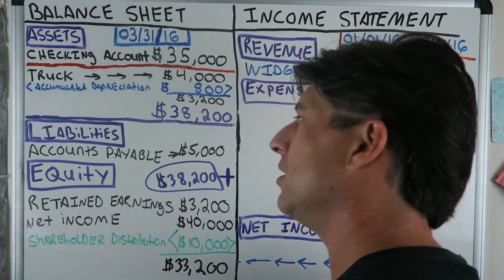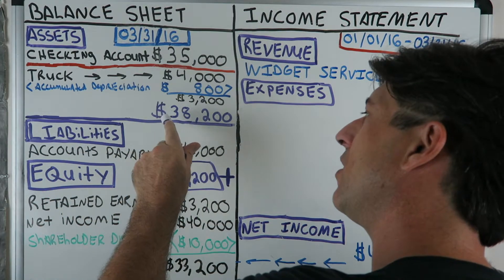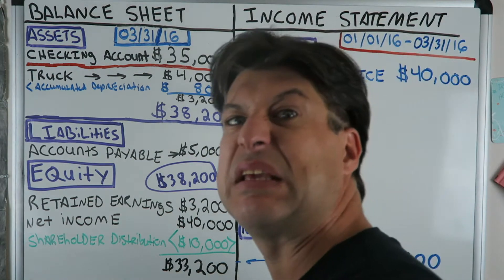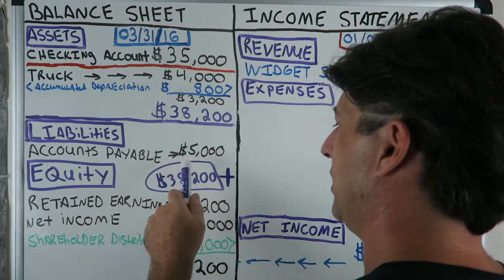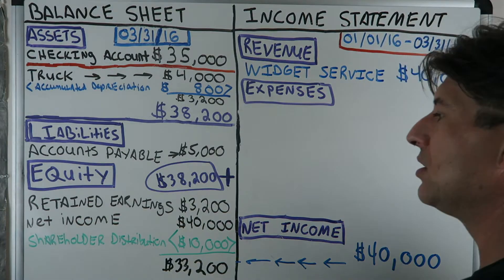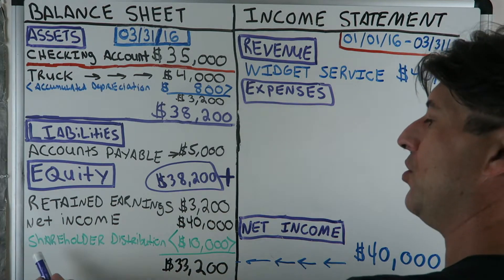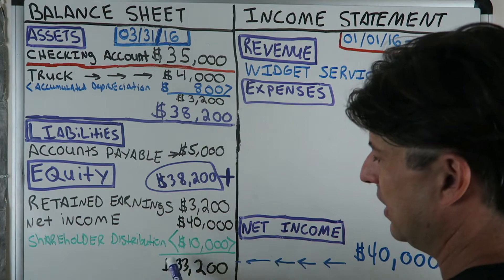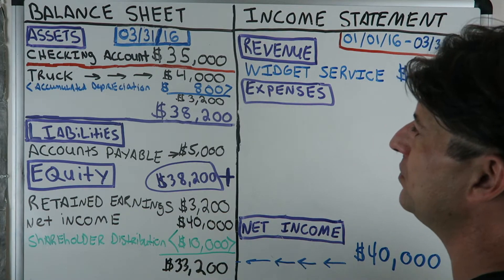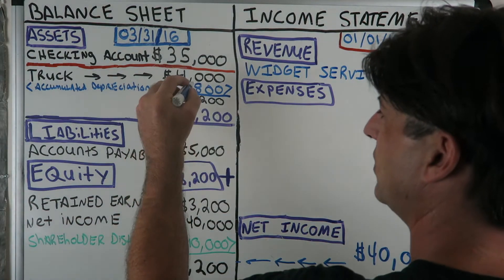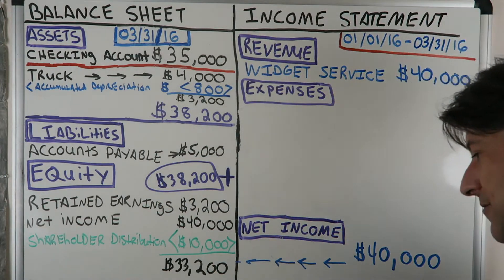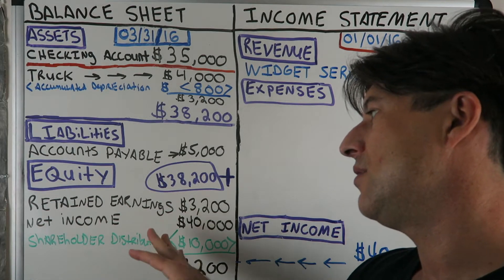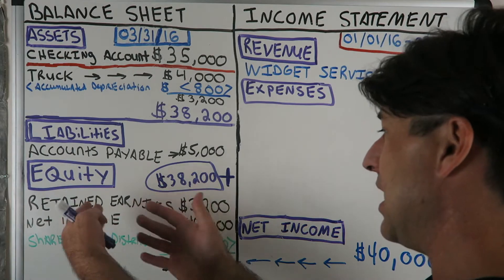Our books leave us with assets of $38,200. Assets equal liabilities plus equity — so what part of that $38,200 does Widget Inc owe to somebody? We have $5,000 of liabilities in accounts payable. Then let's go down to the equity section. Our new entry on the balance sheet is shareholder distribution with negative ten thousand dollars. It's a negative equity — the way it shows up on the balance sheet is in the equity section as a negative.